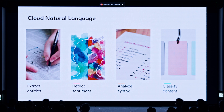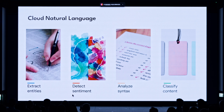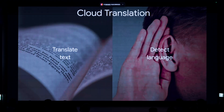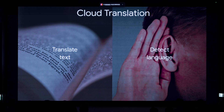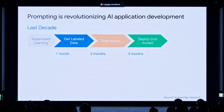What products like Cloud Natural Language do is, if you have all of these documents, you can convert them into structured data. If you have customer reviews, you can detect the sentiment of those customer reviews using AI models for natural language. Google Cloud Translation has essentially translated thousands of languages from one to another, and that's been around for almost a decade. All of these are supervised machine learning models that have been around for the last decade.